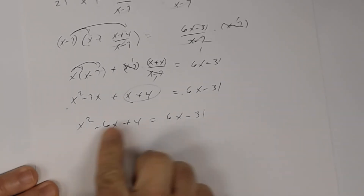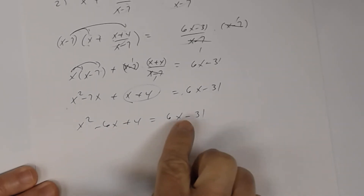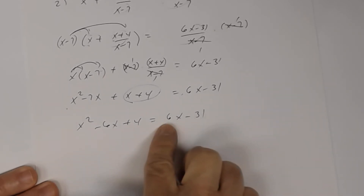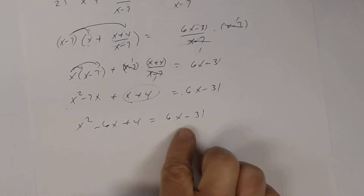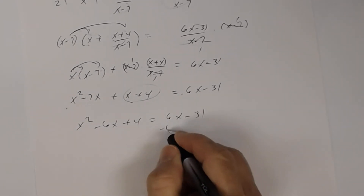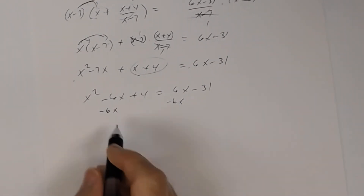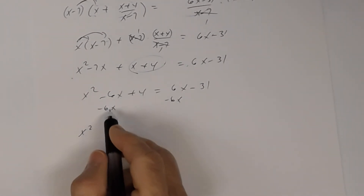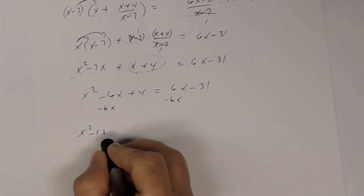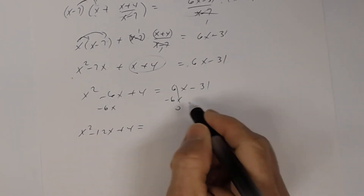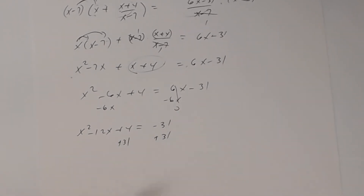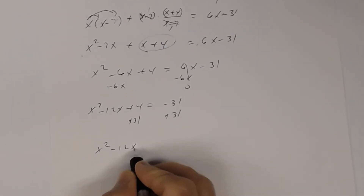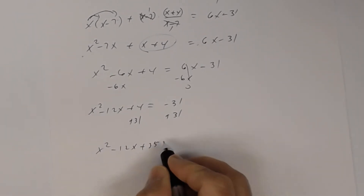Notice it went from a rational equation to a quadratic. Since it's quadratic, let's bring everything to one side — we need zero on the other side. Subtract 6x from both sides: negative 6x minus 6x is negative 12x, giving x squared minus 12x plus 4 equals negative 31. Adding 31 to both sides, I get x squared minus 12x plus 35 equals zero.